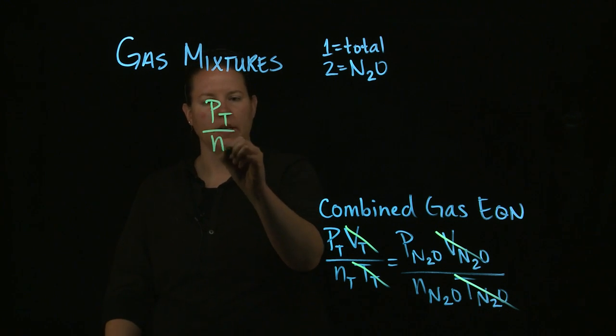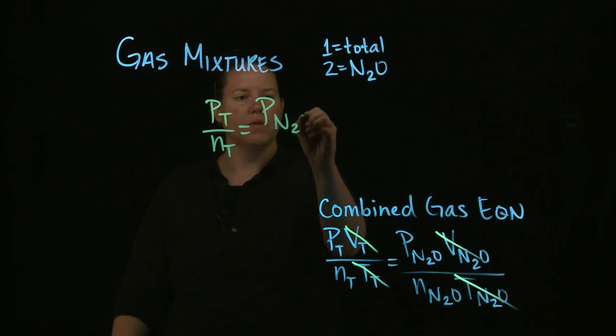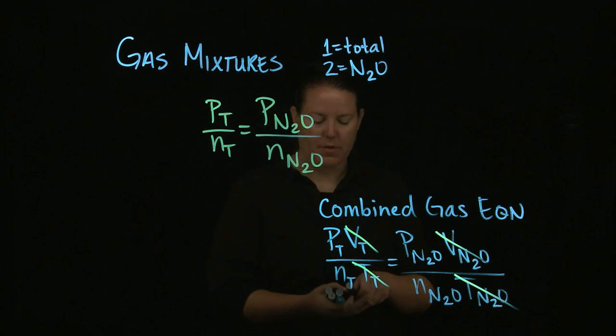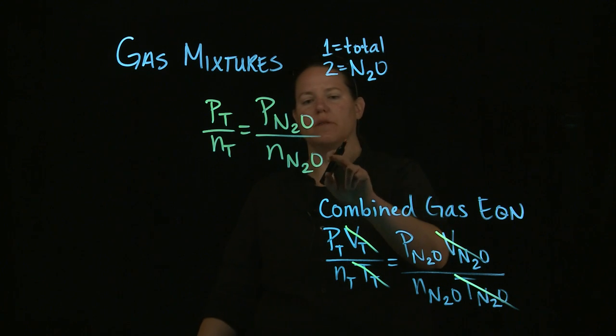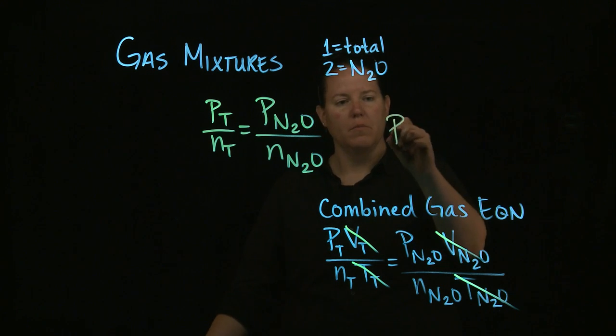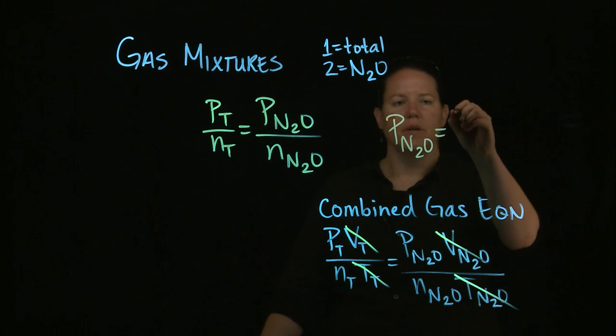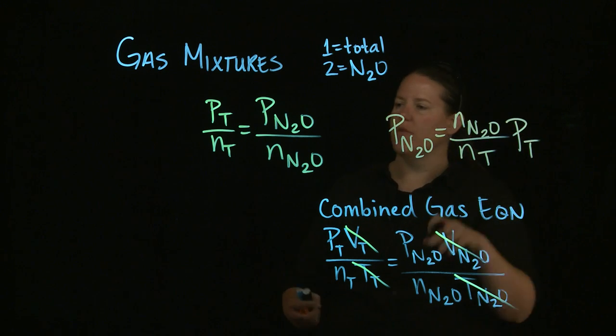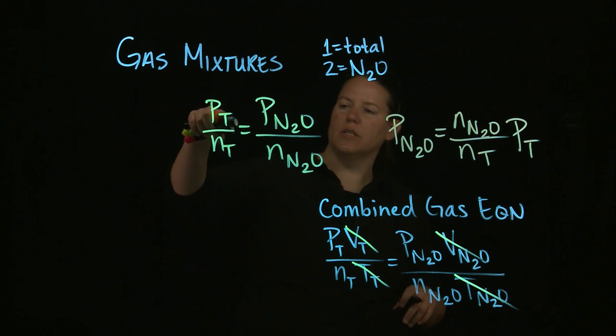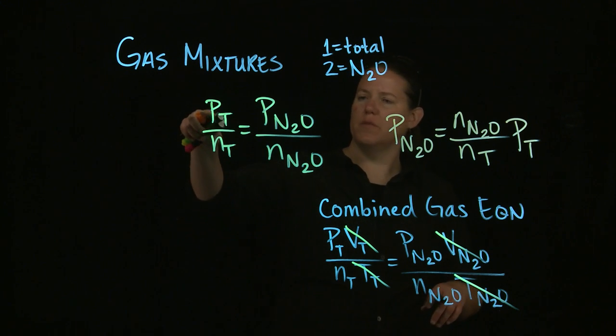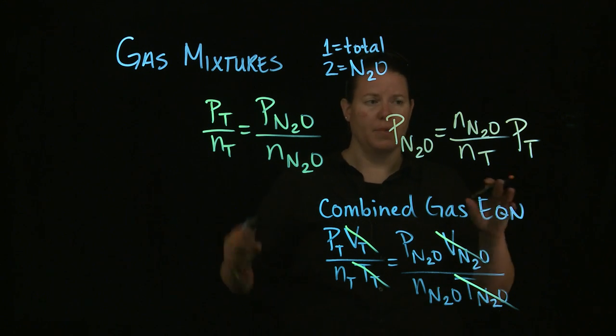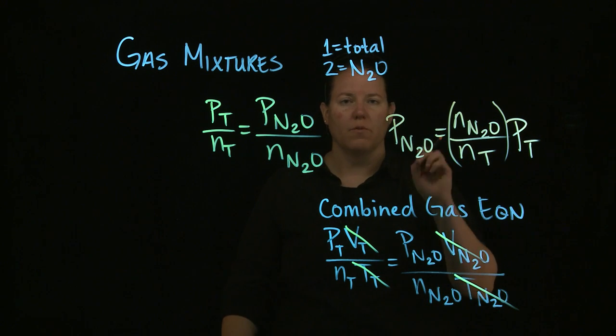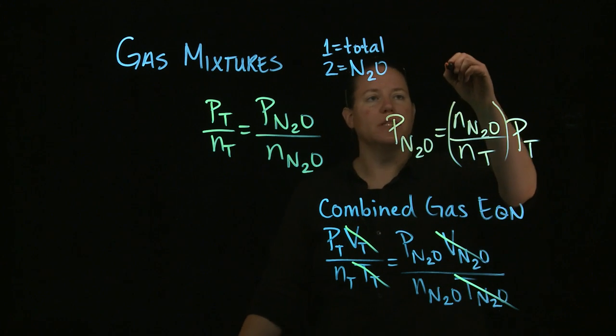So PT over NT equals P of N2O over N of N2O. If I want to solve for P of N2O, I'm going to multiply both sides by N of N2O. P of N2O becomes N of N2O over N of T times PT. I rearranged this just a little bit. I did that for a reason, obviously.